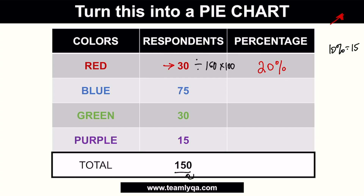The blue is 75 out of 150 — since 75 is half of 150, that's 50%. Green is also 30, so it's 20% as well. Purple is 15, which is 10%. One important thing to remember: check that all percentages add up to 100%. So: 50 + 20 + 20 + 10 = 100%. Now all we need to do is draw the pie chart.